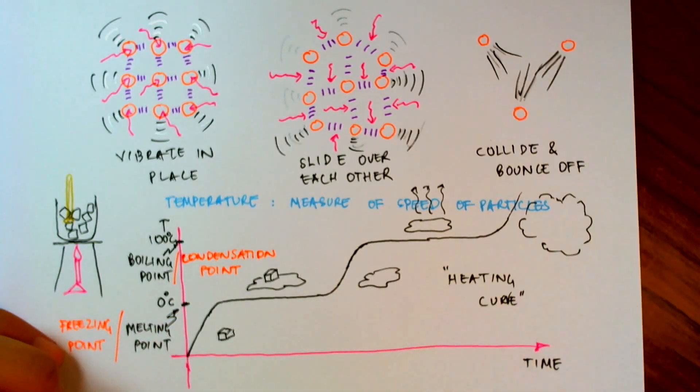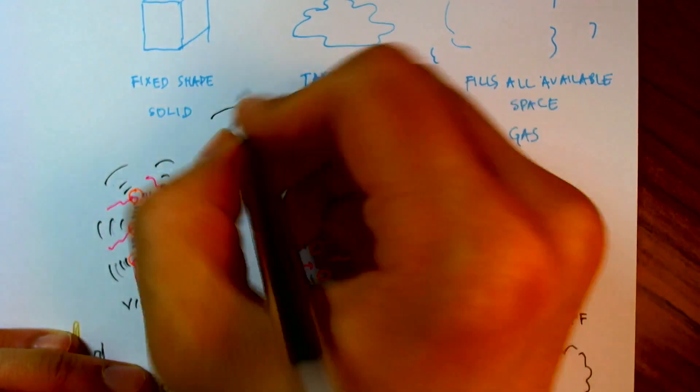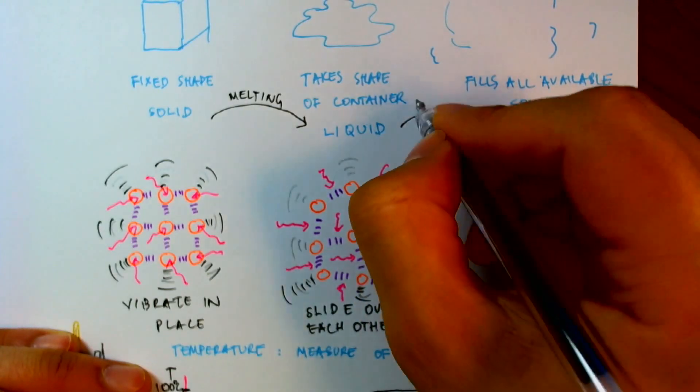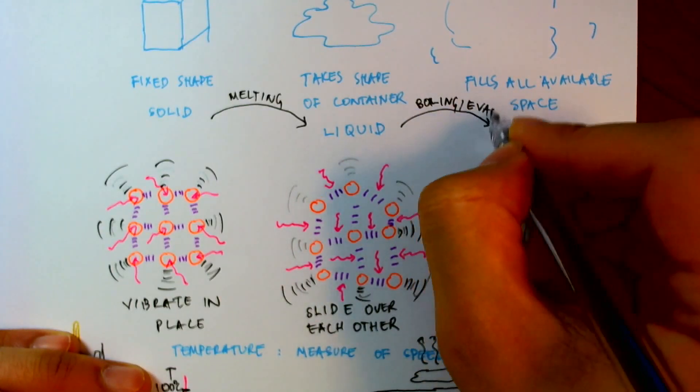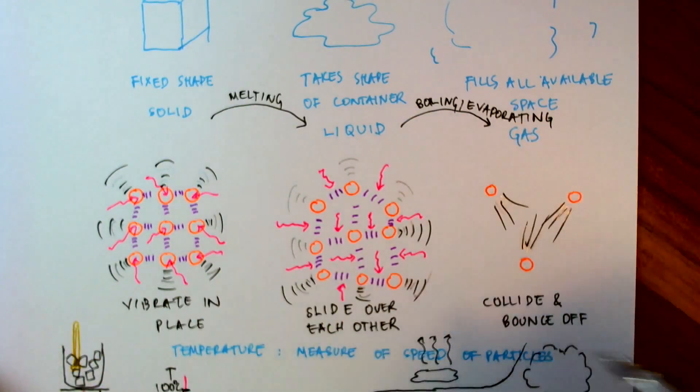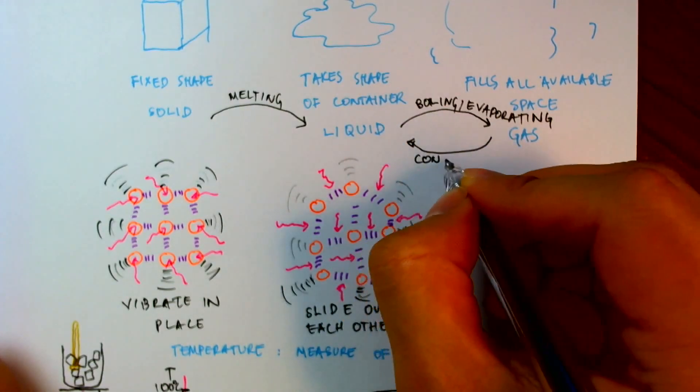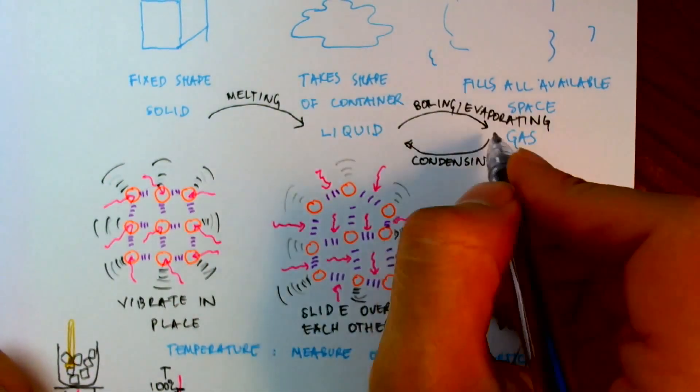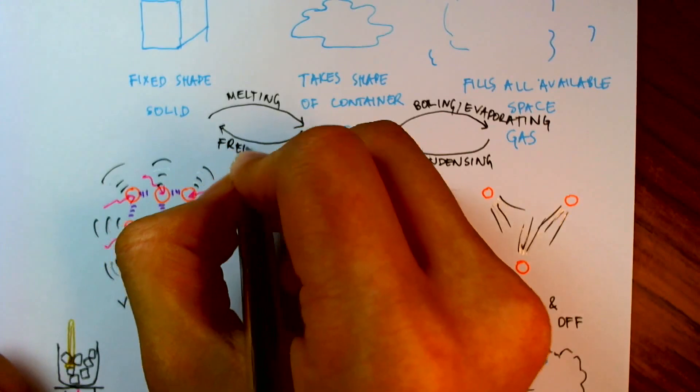To conclude, I'd like to give names to these changes that we've been talking about. So when an object changes from a solid to a liquid, we say that it's melting. And when it changes from liquid to gas, it can either be boiling or evaporating. We'll take a look at the difference between boiling and evaporating in a little while. And when it changes from a gas to liquid, we say that it's condensing. And from a liquid to a solid, that is freezing.